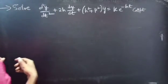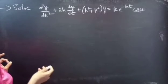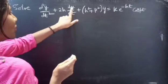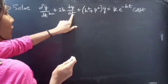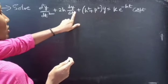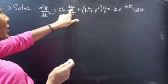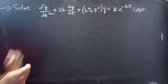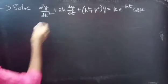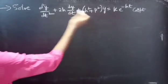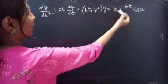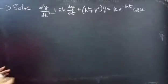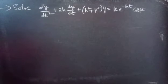Let's see what the dependent and independent variables are in our problem. Here we have dy/dt, so t is the independent variable and y is the dependent variable. h, p, and k are all constants — just treat them as constants.